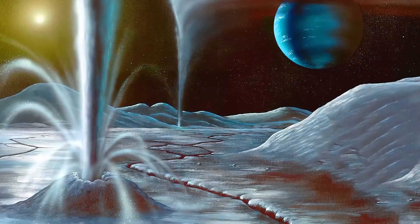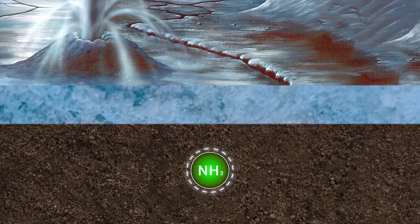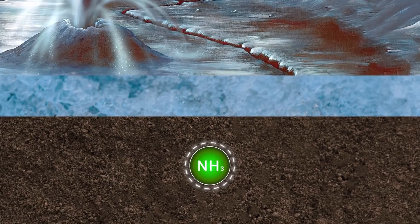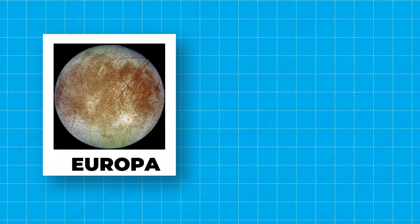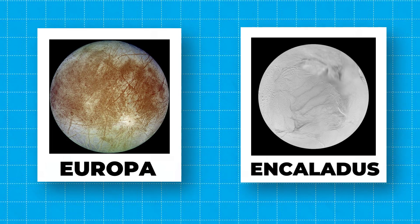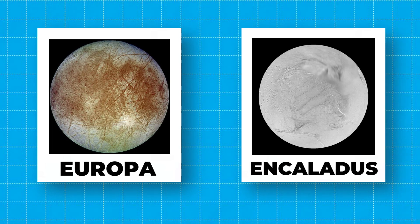One theory proposes that Triton's internal heat melts nitrogen ice pockets, causing eruptions. Another suggests that cryovolcanoes may draw from water reservoirs within the crust. These ideas draw parallels from observed cryovolcanic activity on moons like Europa and Enceladus, where liquid reservoirs fuel eruptions.